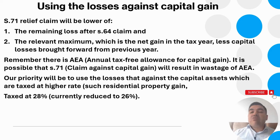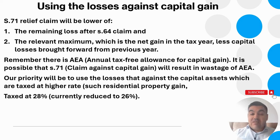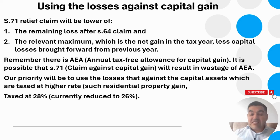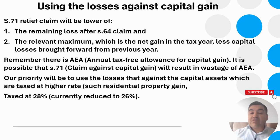When setting trading losses against capital gains, the s71 relief is restricted to the lower of: the remaining loss after the s64 claim, and the relevant maximum — which is the net gain in the tax year less capital losses brought forward from the previous year. Also note that as a result of an s71 claim, you may lose the Annual Exempt Amount (AEA) for capital gains, which the government is considering reducing to £6,000 from the previous £12,300.